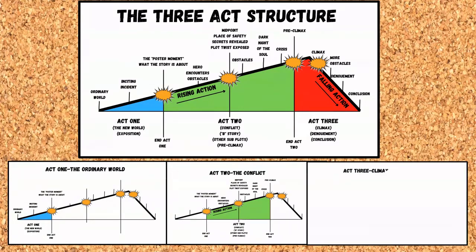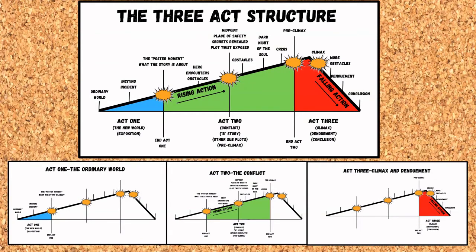The third act leads us to the climax. The hero and his allies have reached the point of no return and must either prevail or perish. And this is where some of them do perish — key allies are lost at this point. Then the story winds down in what's known as the denouement, where the life of the hero returns to normal.